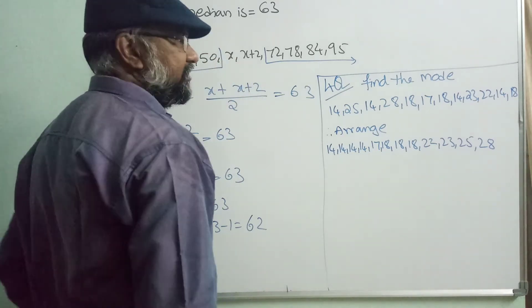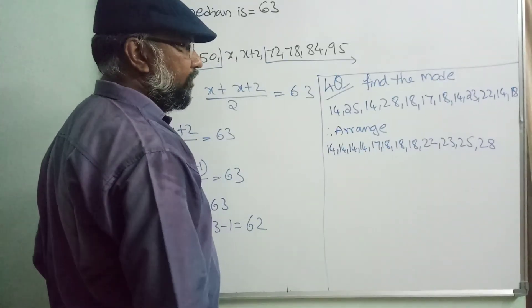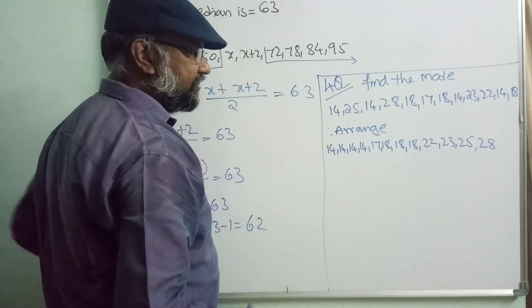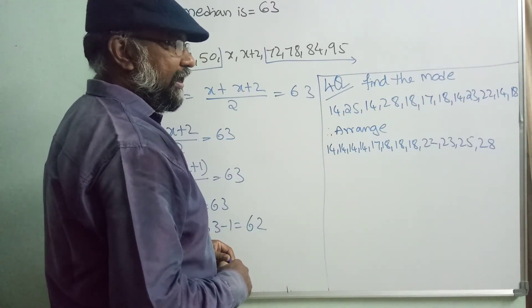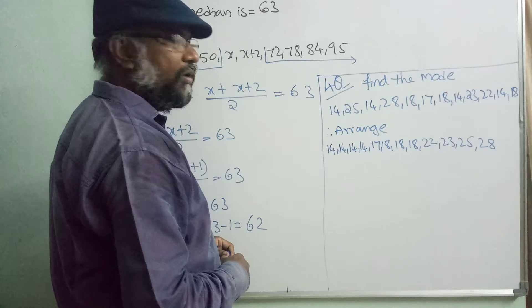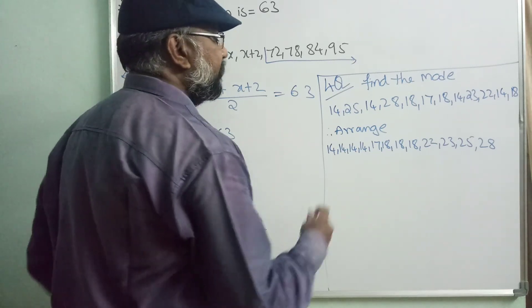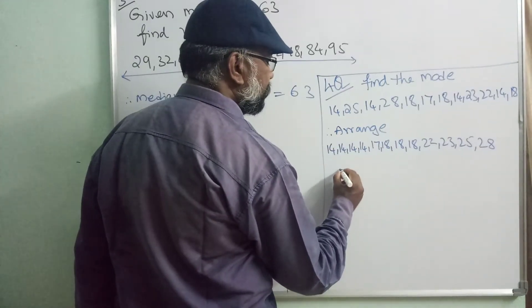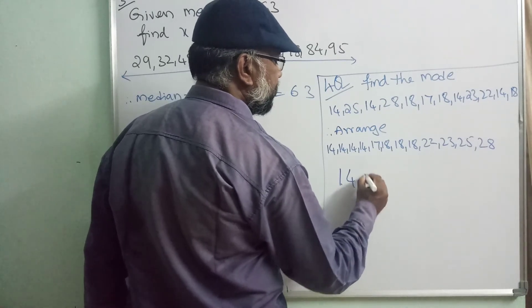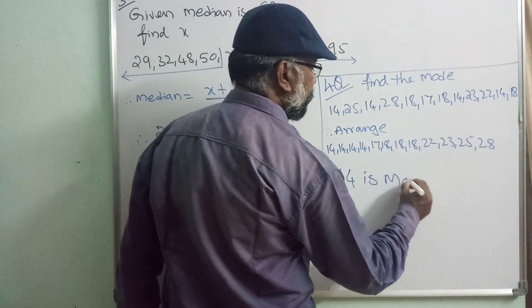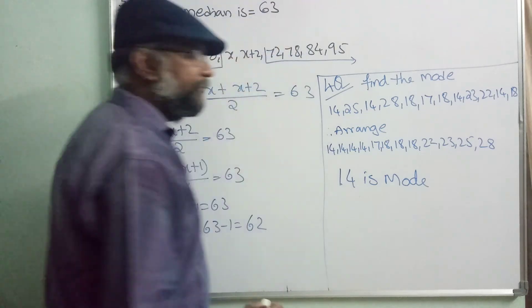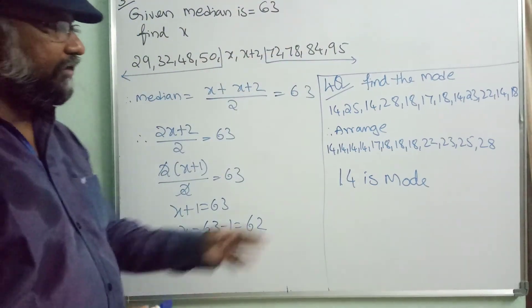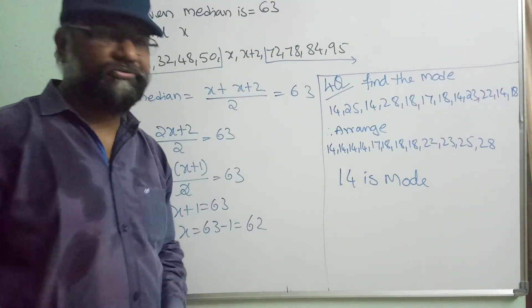So fourth question is very simple, find the mode. These are the observations, arrange them. So what is the mode here? So the 14 is the number, so 14 is mode of this data. So 14 repeated 4 times, that's all.